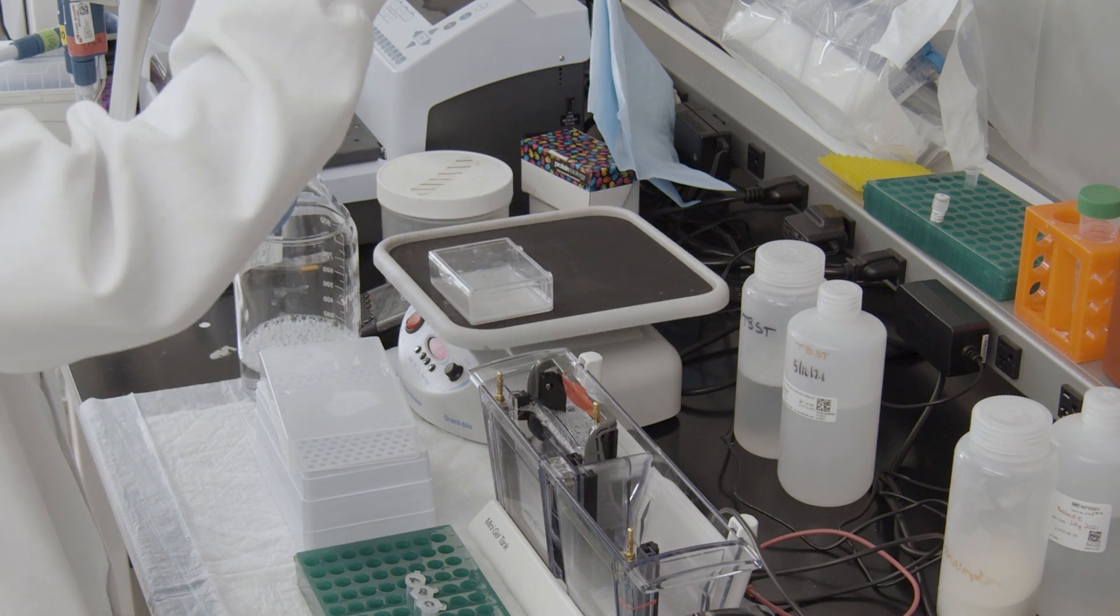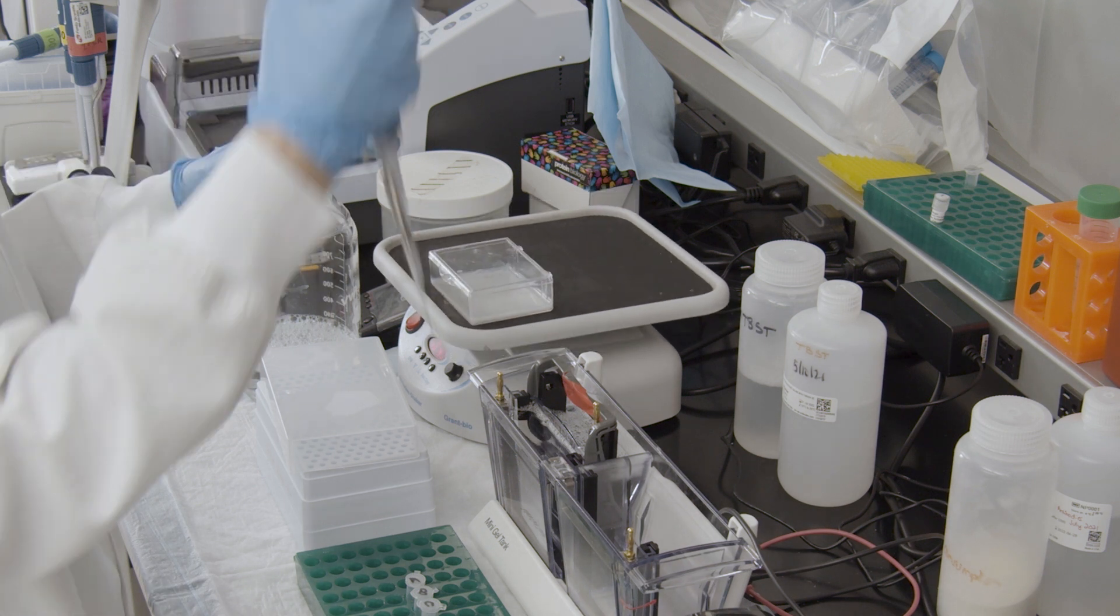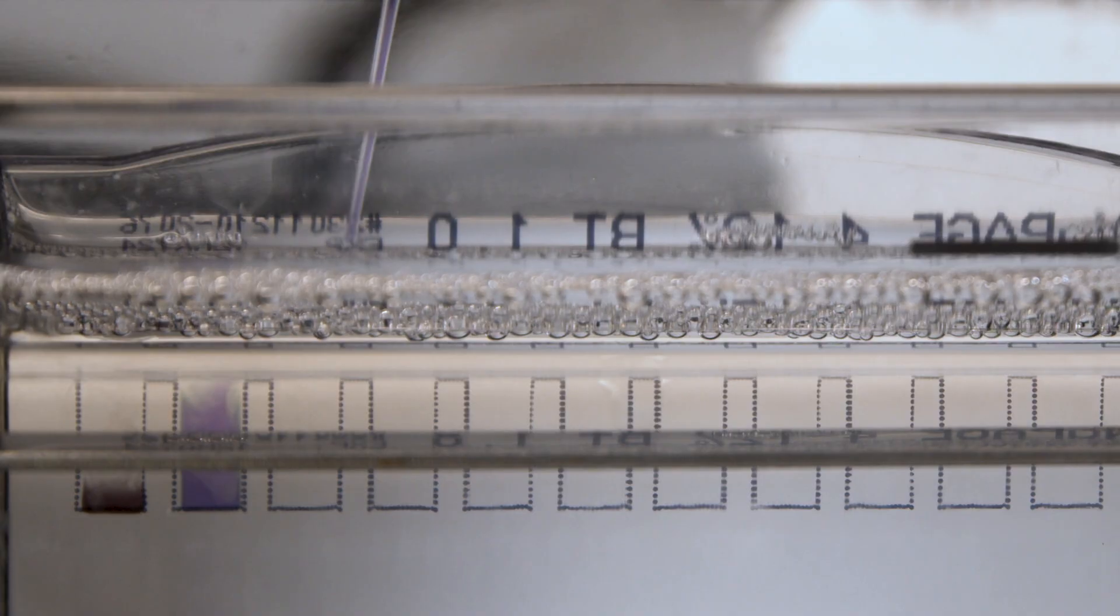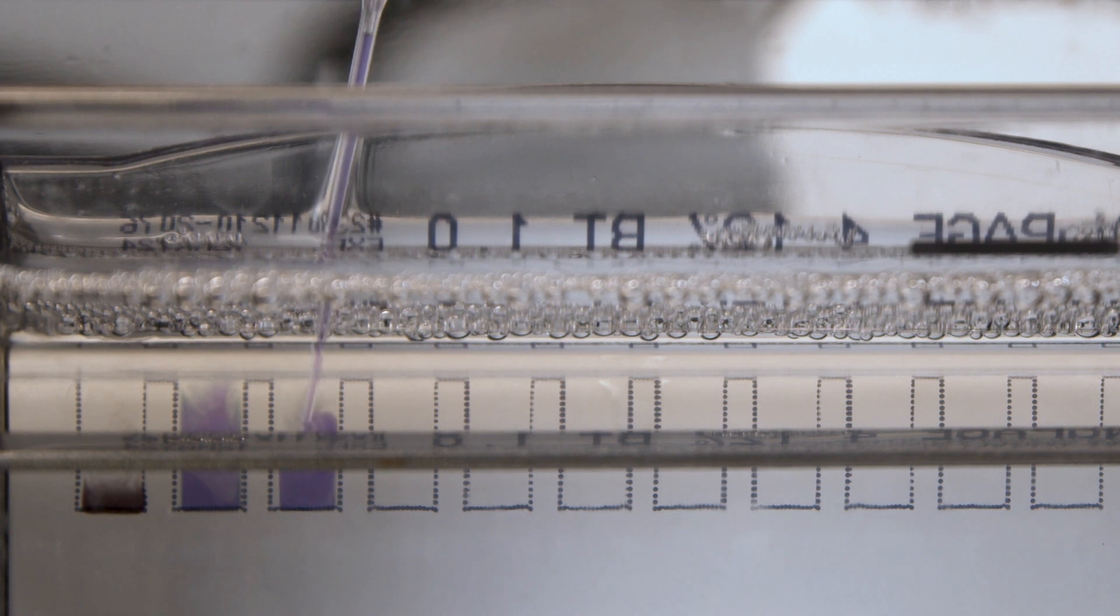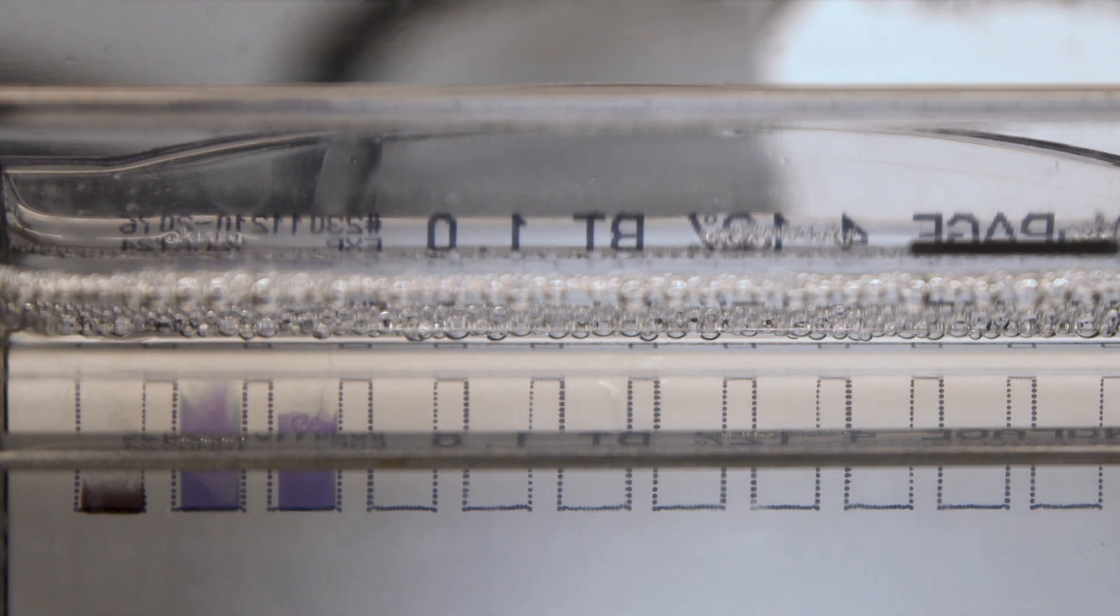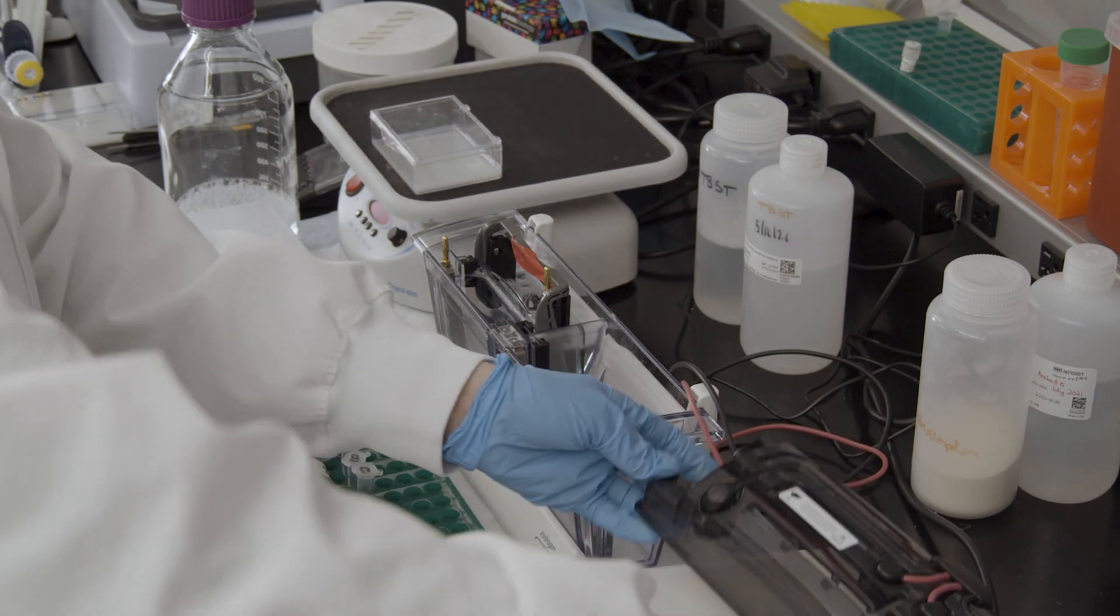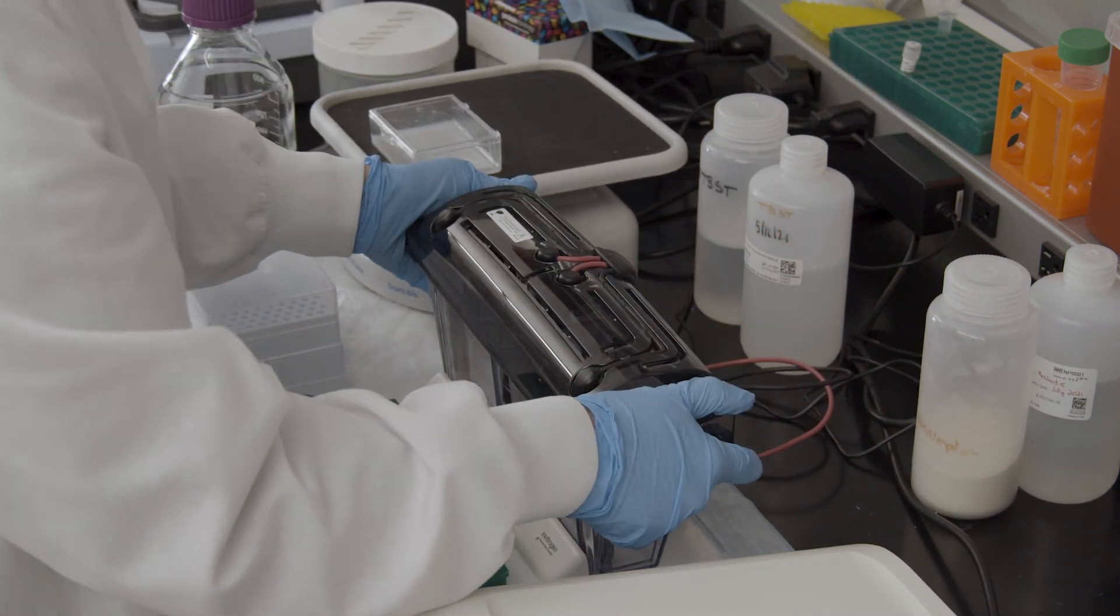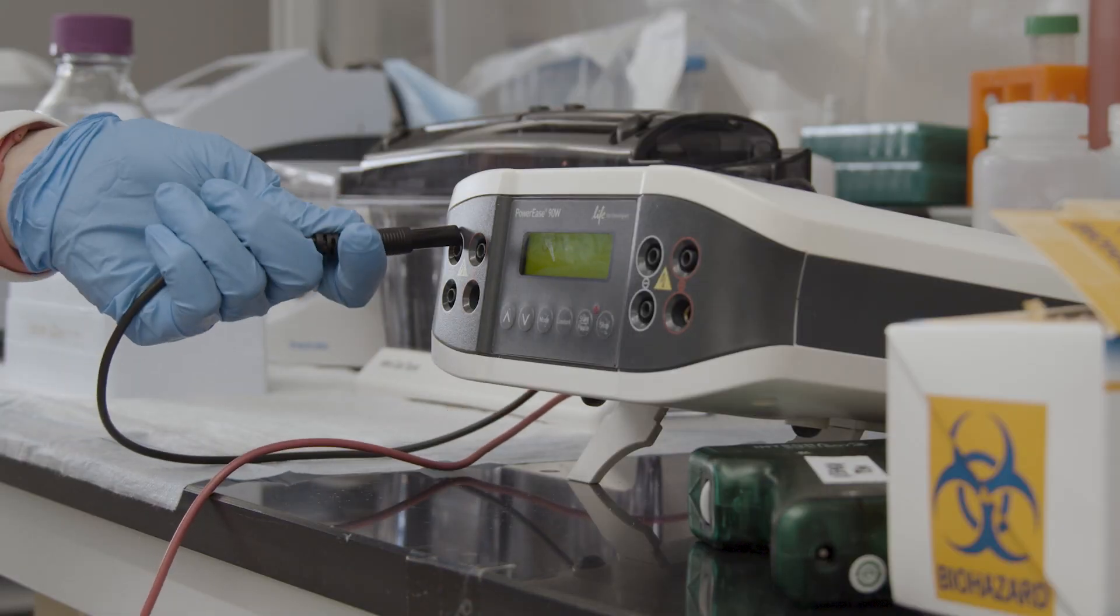Using gel loading tips, gently load a pre-stained protein standard into a gel lane. Then pipette each sample into its own lane. Be very careful not to introduce bubbles when pipetting. Attach the electrodes to the electrophoresis chamber and connect to the power supply.